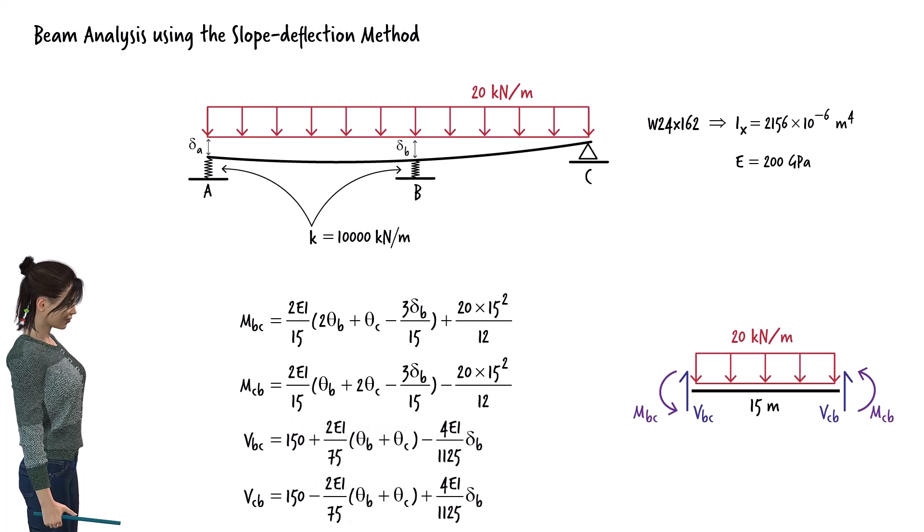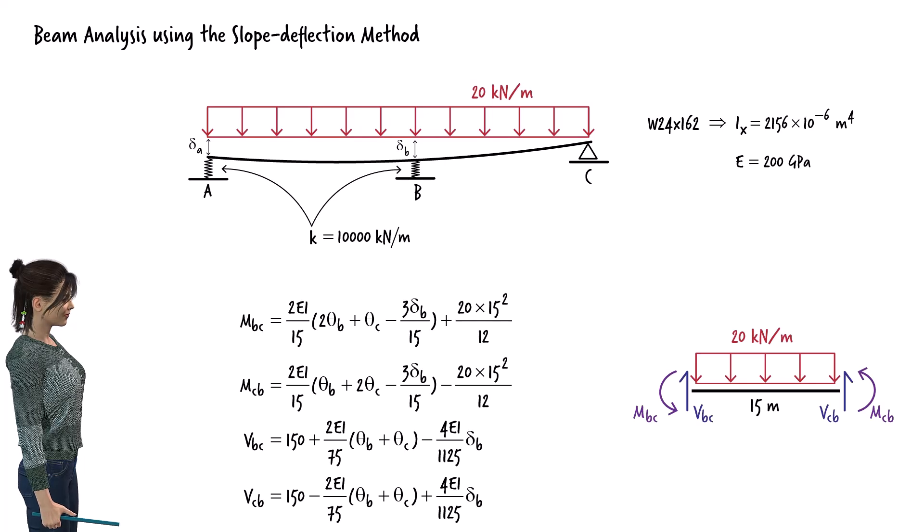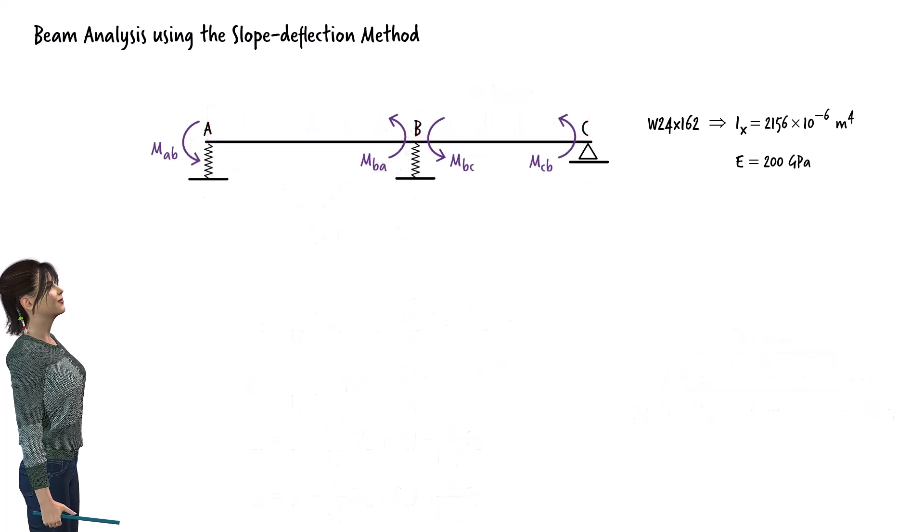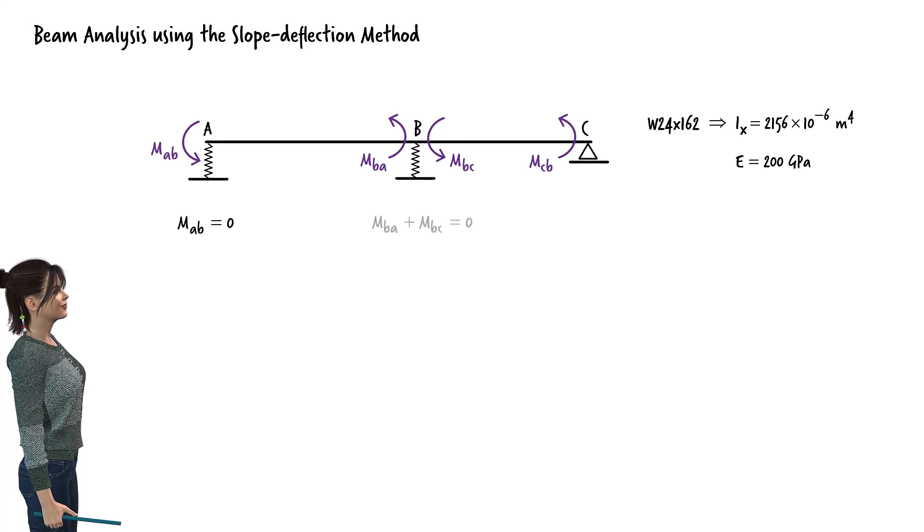Knowing the member-end shear and moment equations, we can proceed to write and solve the joint equilibrium equations for the unknown rotations and displacements. The sum of the moments acting at joints A, B, and C must equal zero. So, we can write MAB equals zero, MBA plus MBC equals zero, and MCB equals zero.